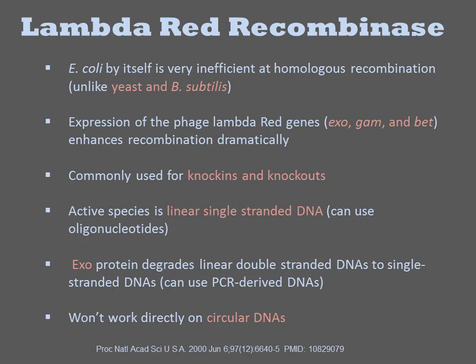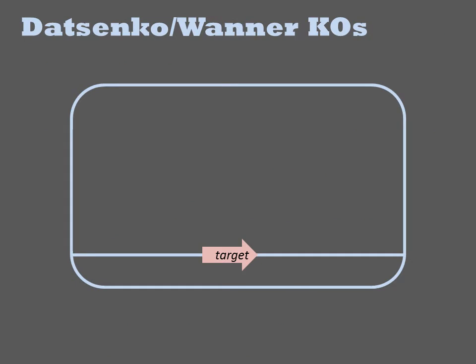Often that linear DNA is a PCR product. The method does not work directly on circular DNAs, but linear DNAs can be generated from circular DNAs by treatment with any of the various restriction enzymes. A very popular setup for homologous recombination in E. coli and other prokaryotes is the Datsenko-Wanner method.